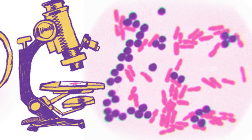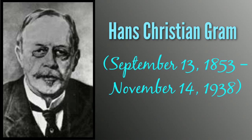Graham-positive bacteria appear purple under a microscope because their cell walls are so thick that the solvent cannot penetrate them, while Graham-negative bacteria have thinner cell walls that allow the solvent to wash away the stain.